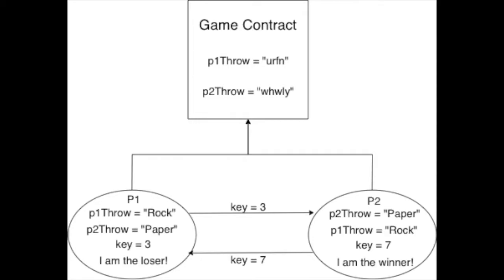Now each player has all of the information they need to decode the encrypted throws that their opponent has posted on the game contract. In this case, player 1 realizes that player 2 threw paper, and likewise player 2 sees that player 1 threw rock, and they can use game logic to determine the winner of the game.